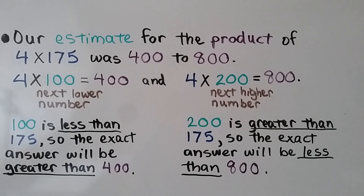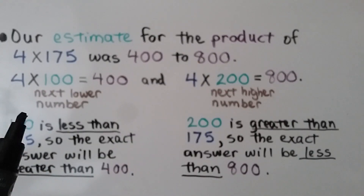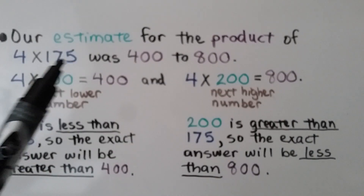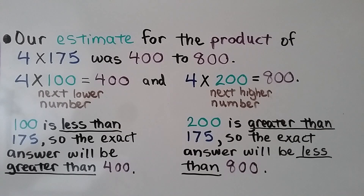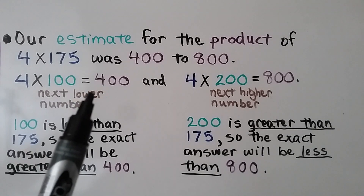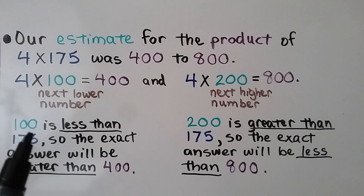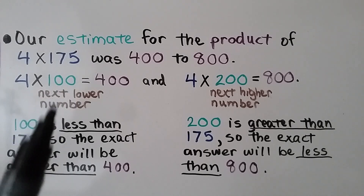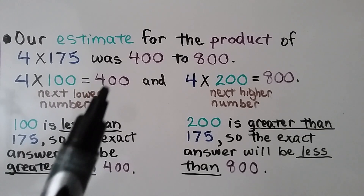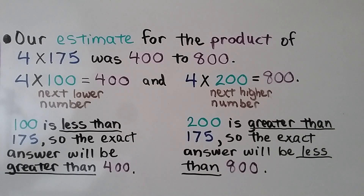Our estimate for the product of 4 times 175 was 400 to 800. By rounding down 175 to 100 — the next lowest number — we get 400. Since 100 is less than 175, the exact answer will be greater than 400. Because we rounded down, we know the answer is going to be above 400.